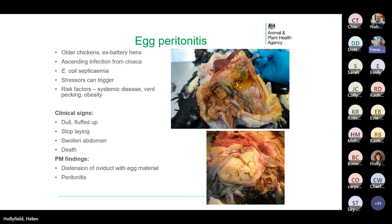It's usually the result of ascending infection from the vent, but it can also result from haematogenous spread from the air sacs, and affected birds ultimately succumb to an E. coli septicaemia. A variety of stressors can trigger egg peritonitis, such as adverse weather conditions or the presence of predators. Systemic disease, vent pecking and obesity are also risk factors.